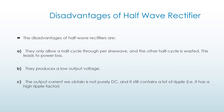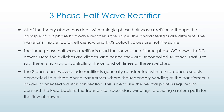Disadvantages of half wave rectifiers. They only allow a half cycle through per sine wave and the other half cycle is wasted, which leads to power loss. They produce a low output voltage. The output current obtained is not purely DC and it still contains a lot of ripples, meaning it has a high ripple factor, which also leads to power loss.